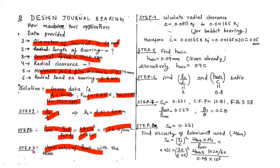Step 4: Calculate the radial clearance, denoted by c, assuming we are using a Babbit bearing. From the design data book, the radial clearance formula gives a value based on the journal radius R_j. Since the journal diameter is 60 mm, R_j = 30 mm. Substituting, the radial clearance c = 0.05 mm.